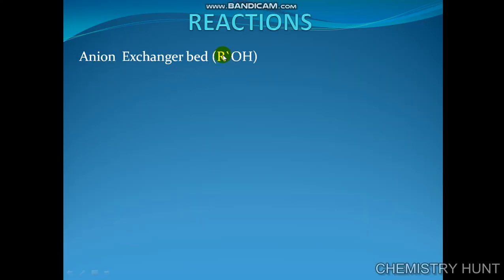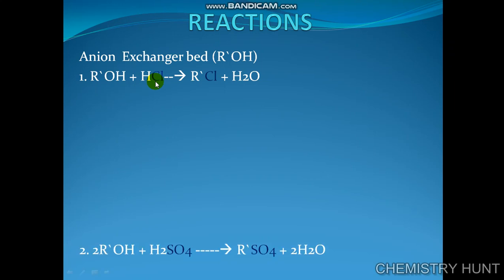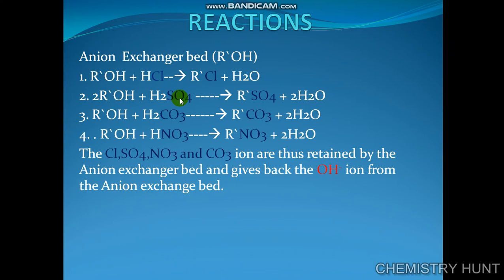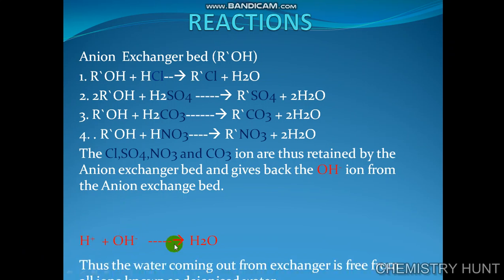For the anion exchanger bed reaction, represented by R'OH: the acidic water contains HCl, H₂SO₄, H₂CO₃, and HNO₃. All anions — chloride, sulfate, nitrate, and carbonate — are retained by the anion exchanger bed as R'Cl, R'SO₄, R'CO₃, and R'NO₃. The bed gives back hydroxide ions. From the cation exchanger we get hydrogen ions, from the anion exchanger we get hydroxide ions, and together we get deionized water.